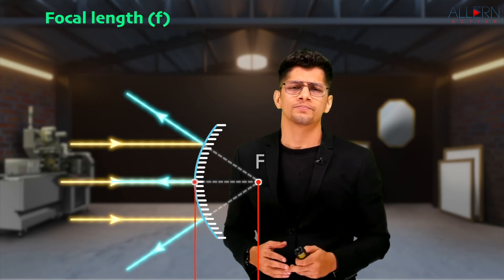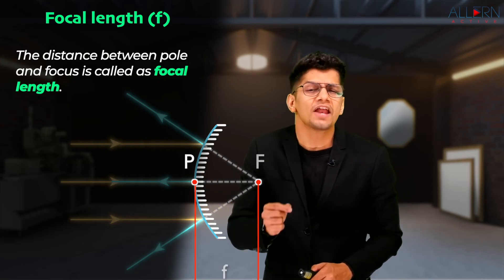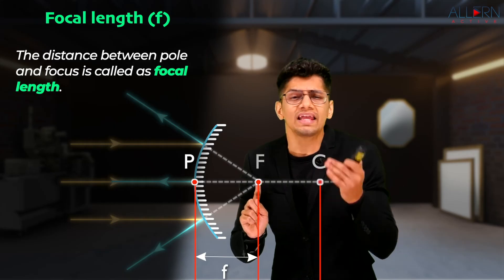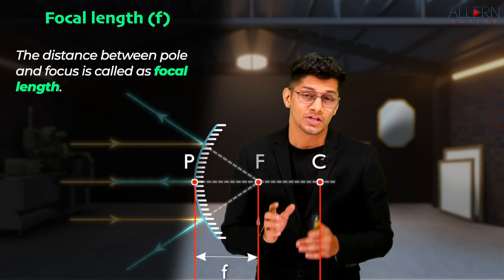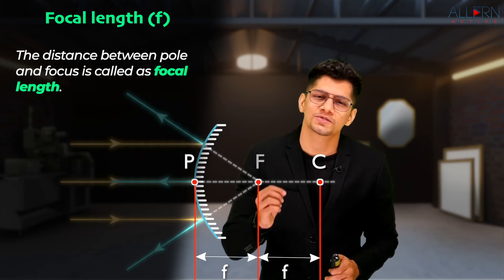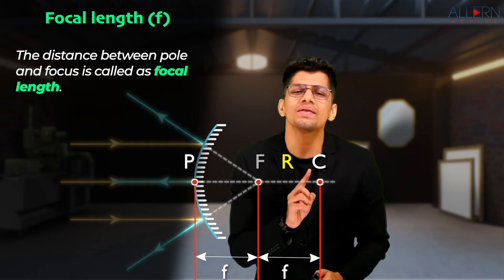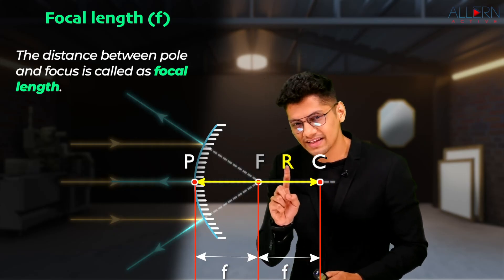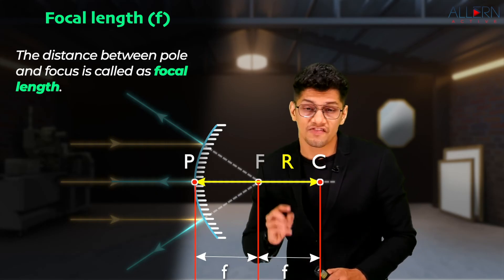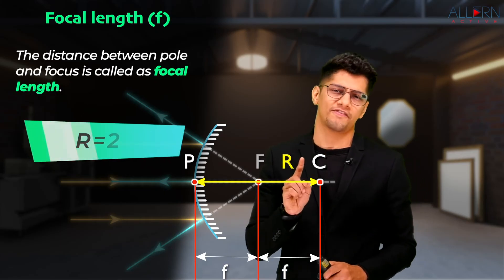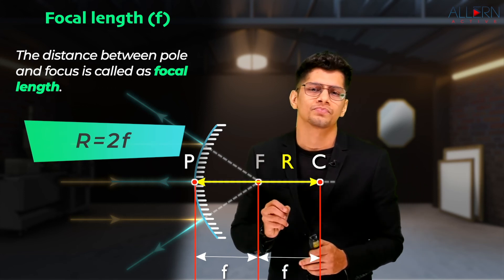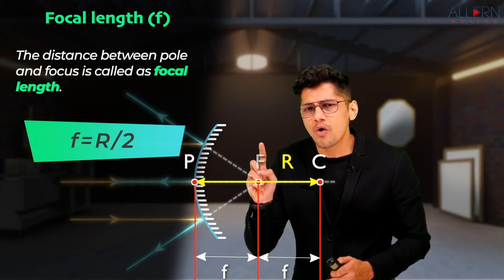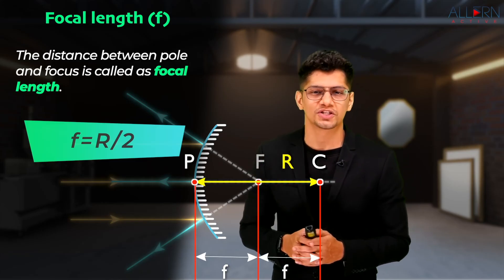The last common term we need to understand is focal length, which is the distance between the pole and the focus, denoted by small f. The distance between the pole and the focus is always equal to the distance between the focus and the center of curvature. Since both distances are equal to f, and the total distance between the center of curvature and the pole is the radius of curvature R, we get R = f + f = 2f. Shifting two to the other side, we get f = R/2. So focal length is nothing but half of the radius of curvature.